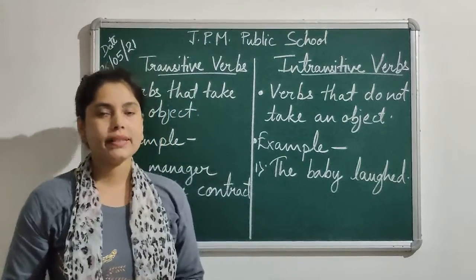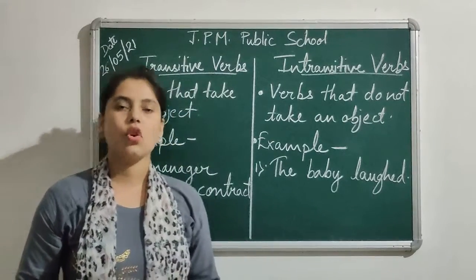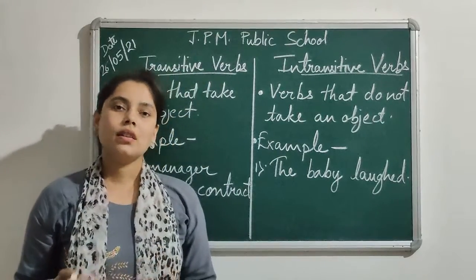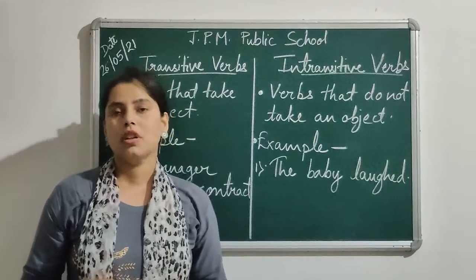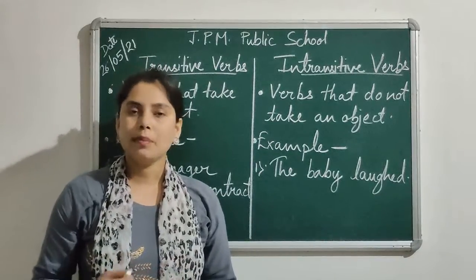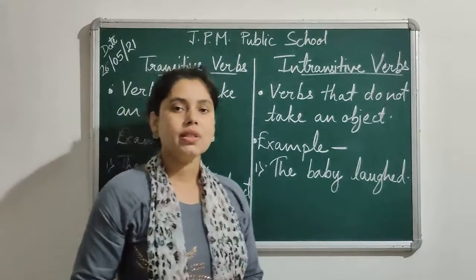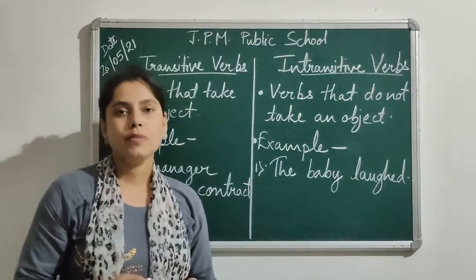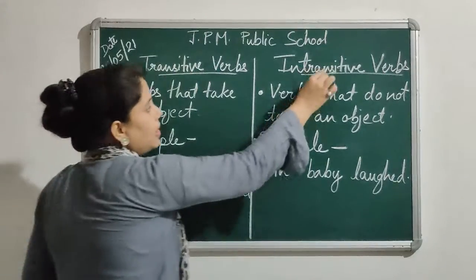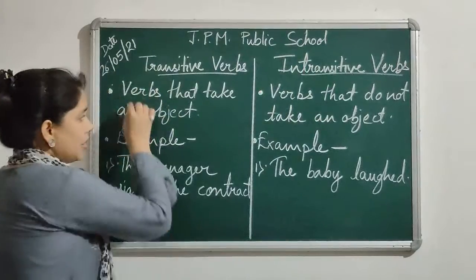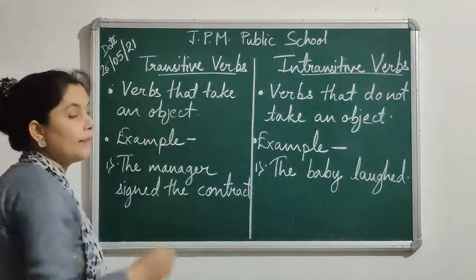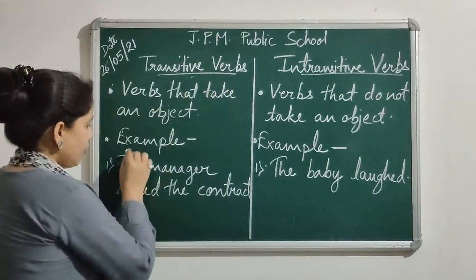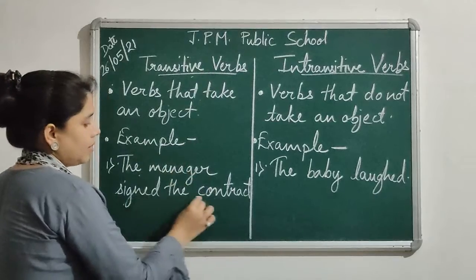As we all know, a sentence consists of a subject, verb, and an object. There are a few verbs which do not require an object to complete their meaning. On the basis of the requirement of objects, verbs can be transitive and intransitive. The verbs that take an object to complete their meaning are called transitive verbs. For example, 'The manager signed the contract.'